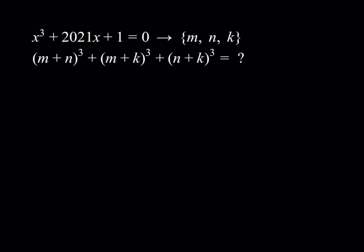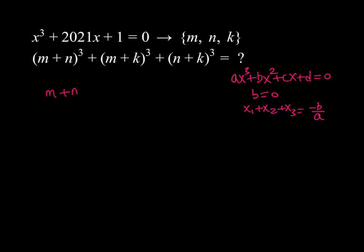The first thing I want you to notice is that this equation is missing the x squared term. So if you write your cubic as ax³ + bx² + cx + d = 0, we have b = 0. Now, in a cubic equation, x₁ + x₂ + x₃ = −b/a, which is always true for any polynomial equation. So if b = 0, that means the sum of the roots is also 0. We get the important conclusion: m + n + k = 0. That's our first relationship.